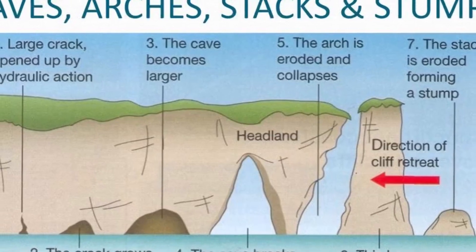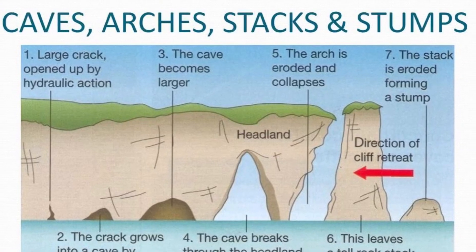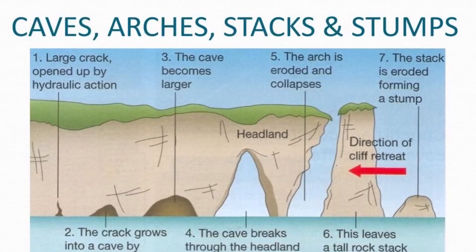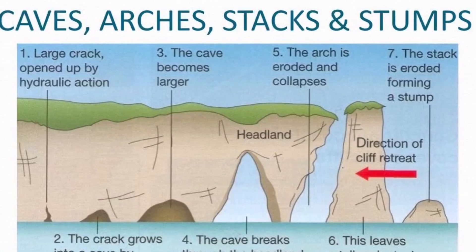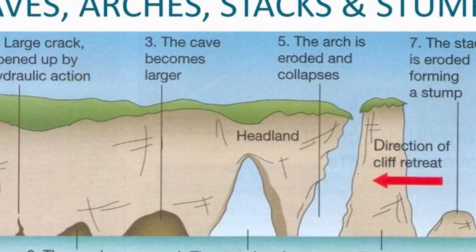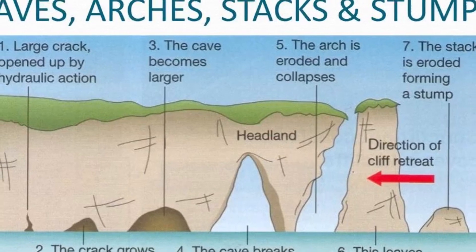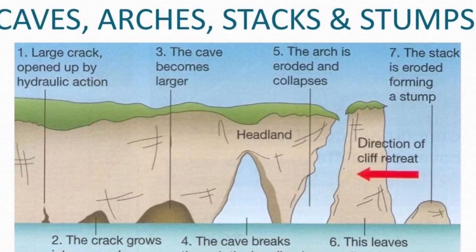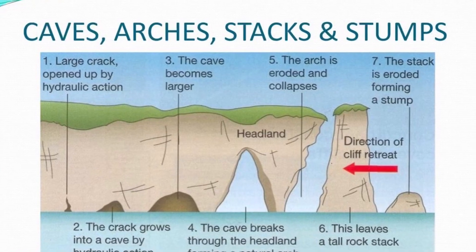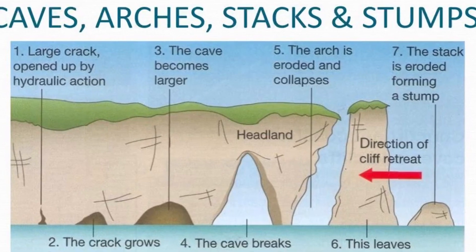Caves, Arches and Stacks - The waves crashing against the base of a cliff can sometimes form a sea cave. Sea caves form along a crack in a rock or an area where the rock is softer. Arches form at headlands — the cave gets completely eroded and forms a pass-through like a tunnel. This landform is known as an arch.